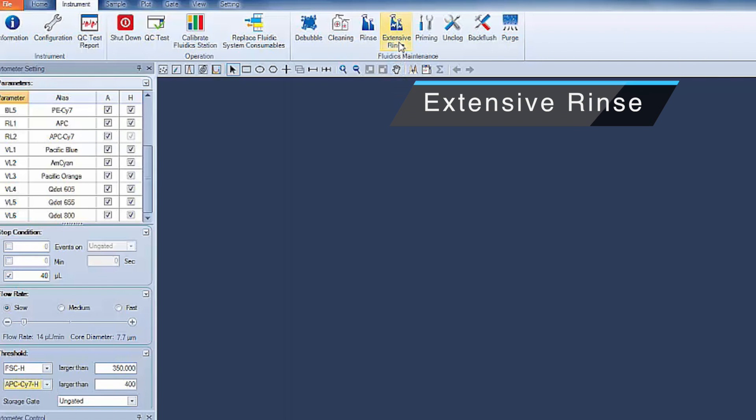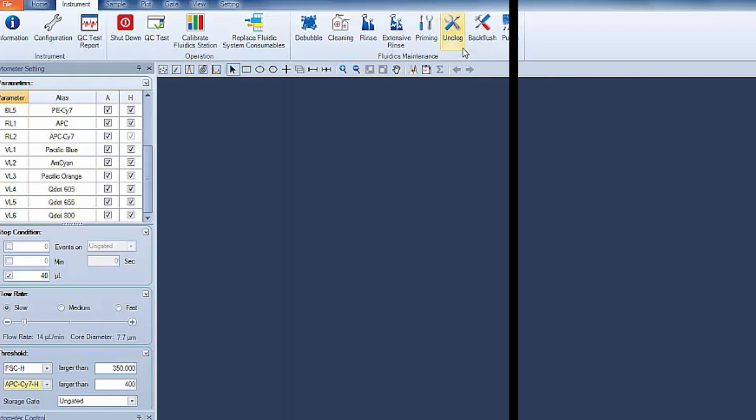Extensive rinse performs an extensive rinse on the fluidic system. Priming, after the instrument has not been in use for a period of time, clears the bubbles and fills the fluidic system with fresh sheath fluid. Unclog clears a blockage from the flow cell. Backflush clears a blockage from the sample injection probe.